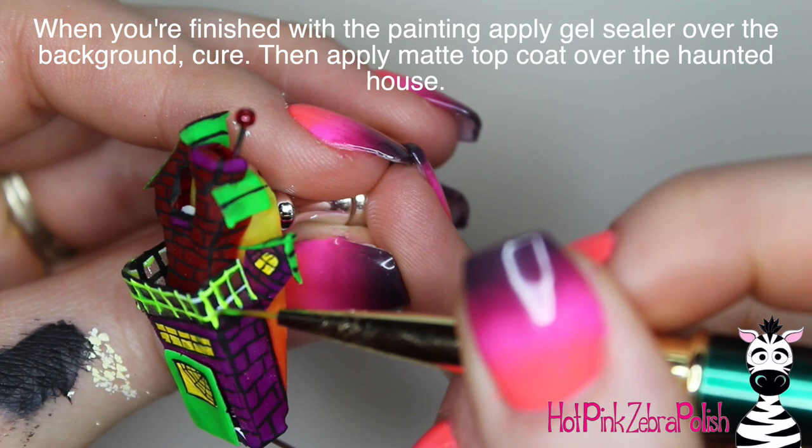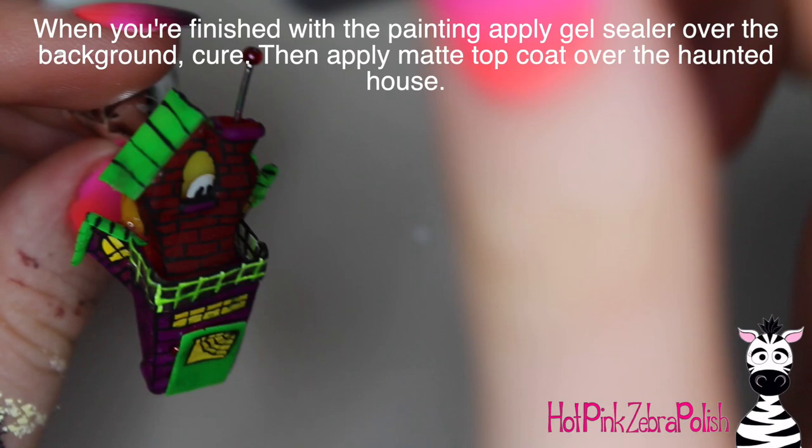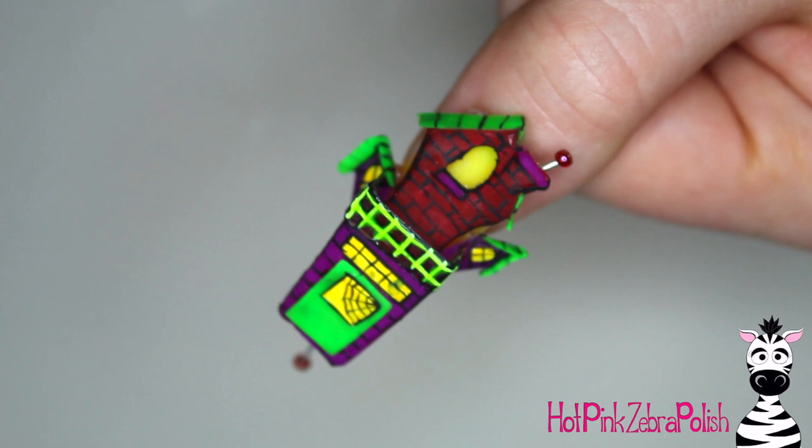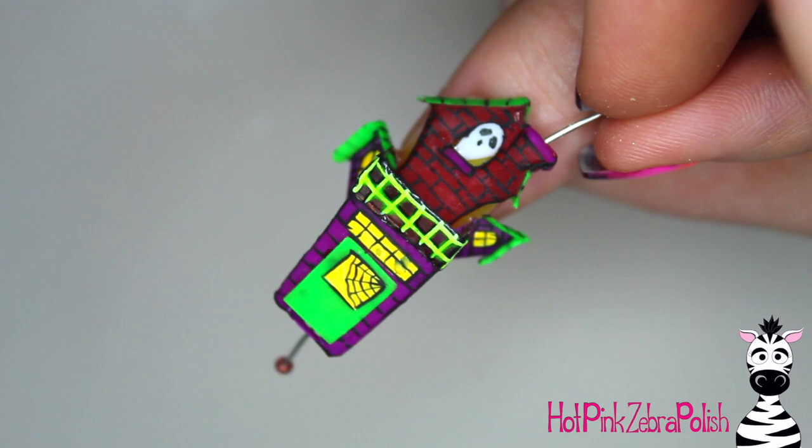And then with some really neon green gel polish, I'm going to go over my white. It's the same concept as the yellow, just make it really bright. And then apply some gel sealer over the background, what little shows, and over your fence. Cure that and then apply matte top coat over the rest of the haunted house. And it's done!